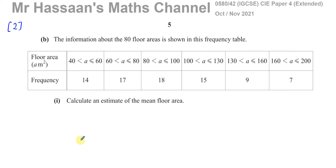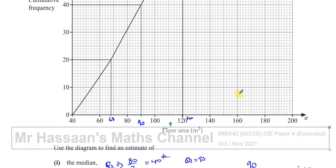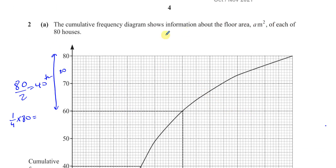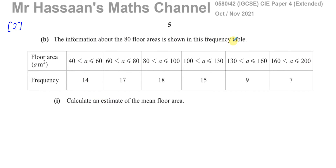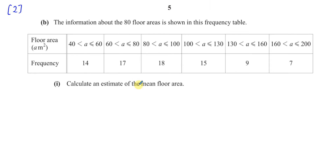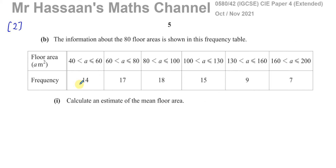In the description you'll find a link to the playlist for this paper. In part B, we have a frequency table made from the cumulative frequency curve showing the floor area of 80 houses. This frequency table tells us, for example, that there are 14 houses with a floor area somewhere between 40 and 60.